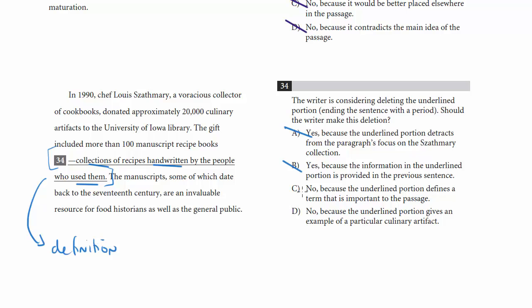So no, we're not going to want to delete this line. No, because the underlined portion defines a term that is important to the passage, exactly defines what a recipe book is. No, because the underlined portion gives an example of a particular culinary artifact. I wouldn't say it's an example, it's more defining what these recipe books are. So we're going to go with choice C.